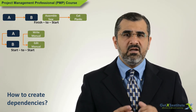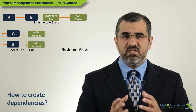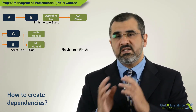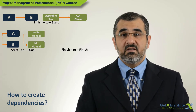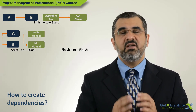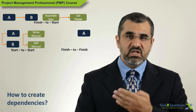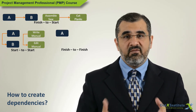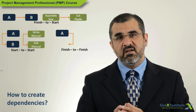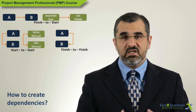The third type is the finish-to-finish relationship. Finish the predecessor activity, then finish the successor activity. The successor activity cannot be logically completed until the predecessor is complete. So finish A, then finish B. If the finish of A is late, B will continue but cannot be logically completed.